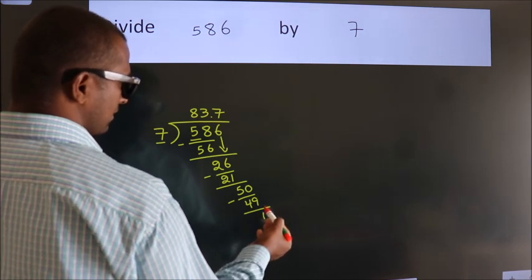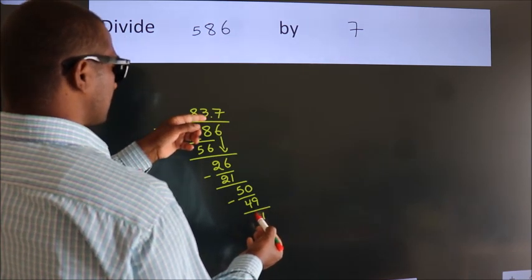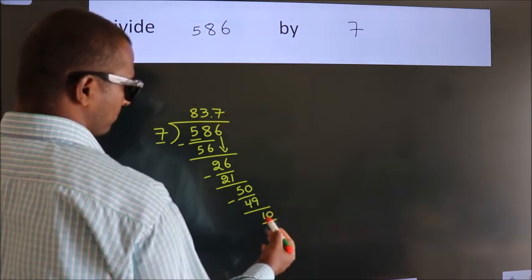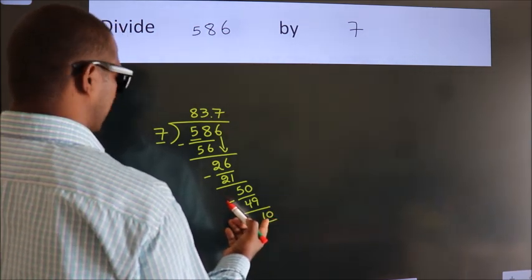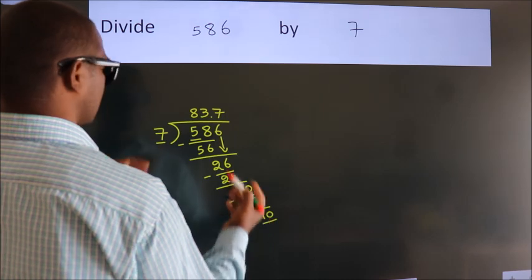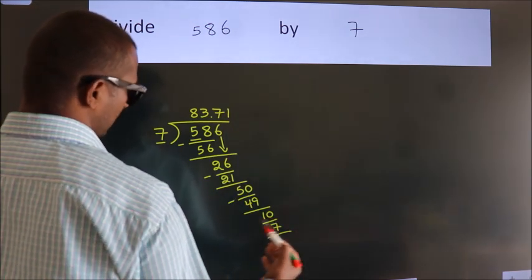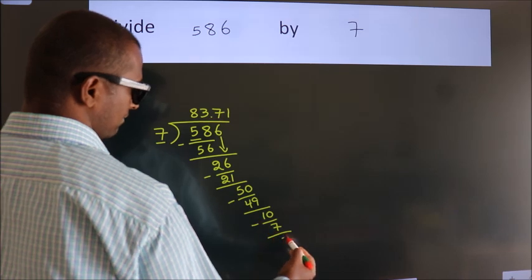After this, we already have the decimal, so directly take 0. So 10. A number close to 10 in the 7 table is 7 times 1, which is 7. Now we subtract. We get 3.